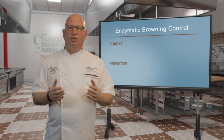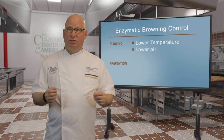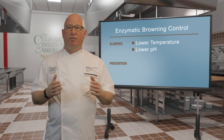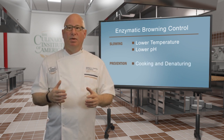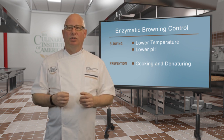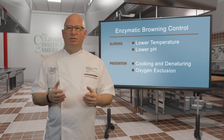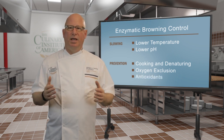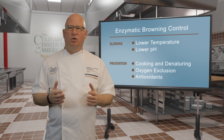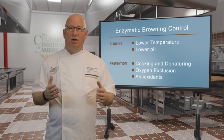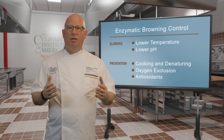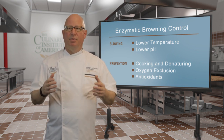Because this reaction is enzymatic, it is slowed down by lowering the temperature. Changing the pH, such as adding vinegar or citrus juice, also slows down the reaction. The reaction is prevented by inactivating the enzyme by cooking and denaturing it, or by the exclusion of oxygen, as it is a necessary component of the browning reaction. Antioxidants, such as ascorbic acid, can also be added to slow the reaction by either being oxidized themselves in place of the polyphenols, reversing the reaction by reducing oxidized polyphenols, or binding up oxygen.